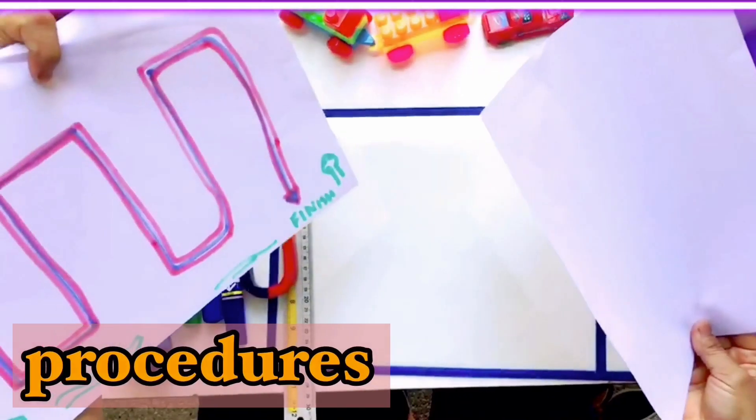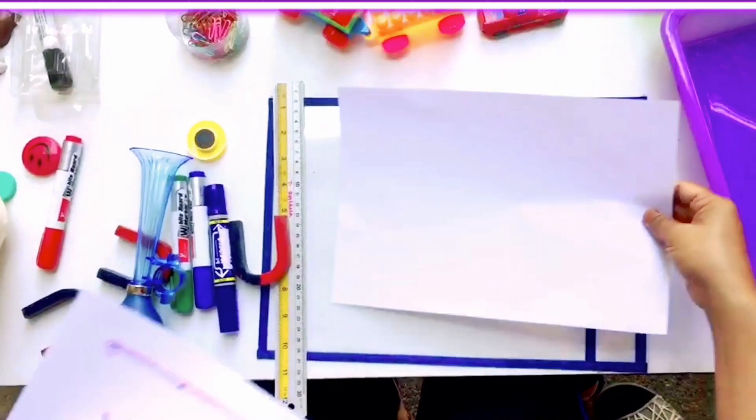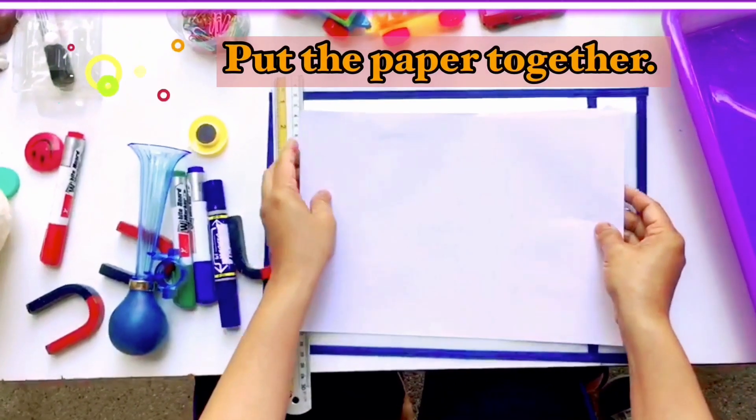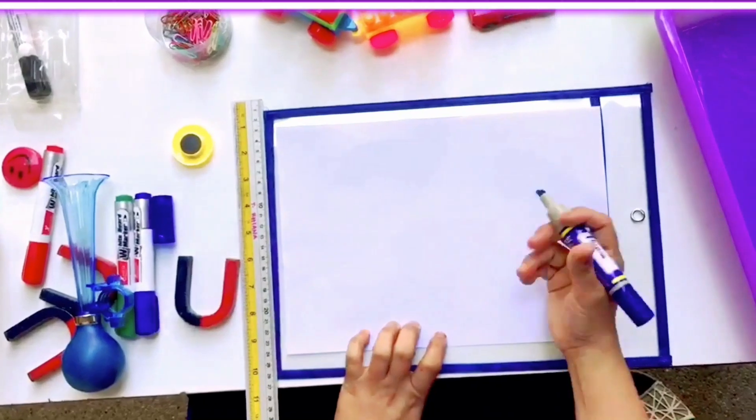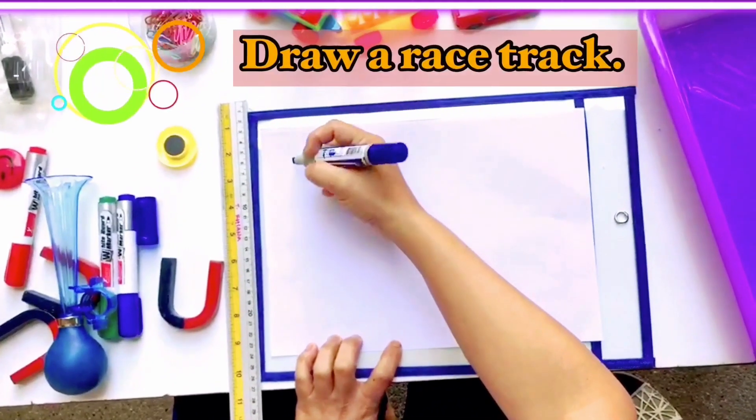I have this one too. But I'm going to show you how to make this. So what we're going to do is we put this one together. And then we're going to draw a race track.